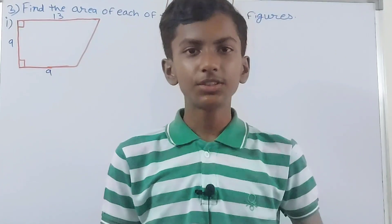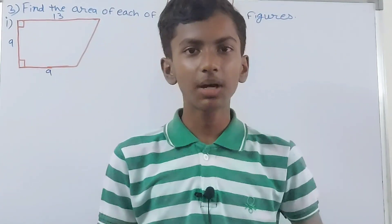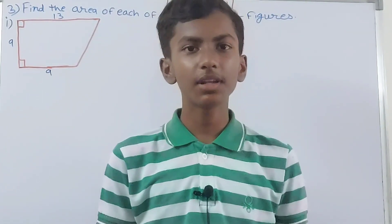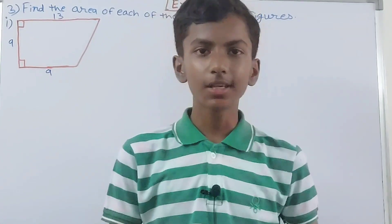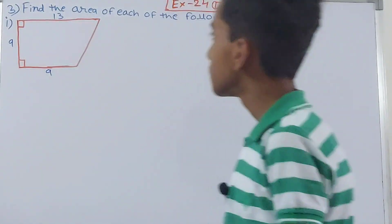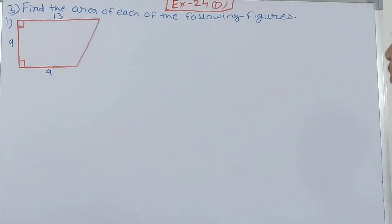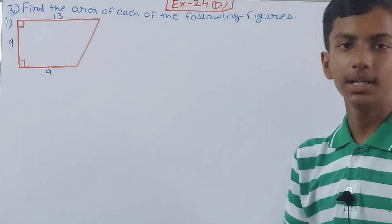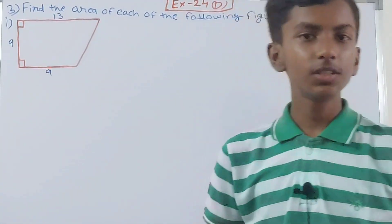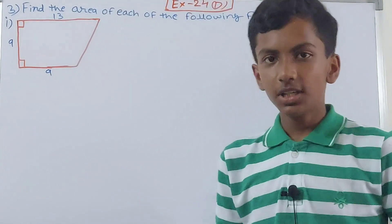In this video we are going to solve ICSC Mathematics Class 7 Chapter 24 Area and Perimeter Exercise 24D Equation No. 3 and this is the first one. It says find the area of each of the following figures. We have to find the area of these figures.